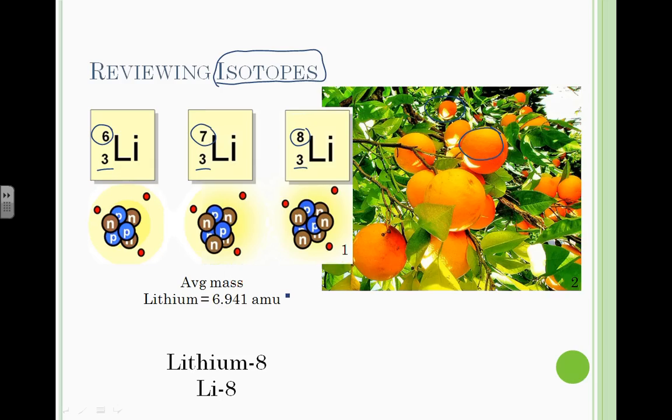Now, when you look at the periodic table, the average mass of lithium is 6.941. But the actual isotopes will have different masses. So, this is one way to indicate the number of protons in the mass of an isotope, where the mass is on top and the number of protons is on the bottom, or the atomic number.